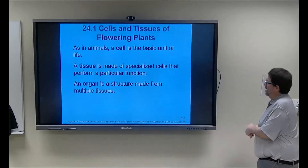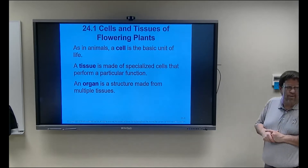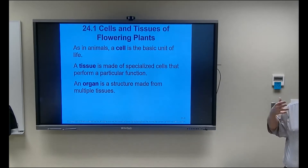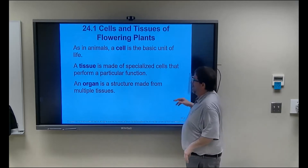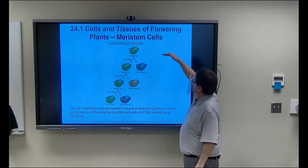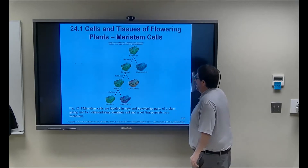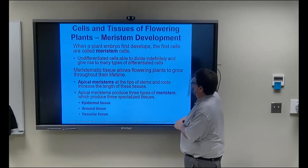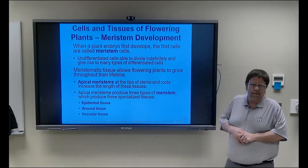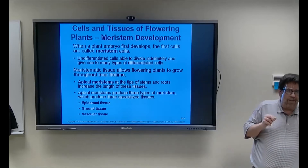Tissue is a group of cells specialized to do a particular job; an organ is a bunch of tissues working together. Meristems will divide into these different cell types. Apical meristem is found in the tips of stems and roots — this is where the plant grows. Plants don't jack up the existing structure; they just add a new floor on top. They only grow up and down at the roots, tilts, and shoots.